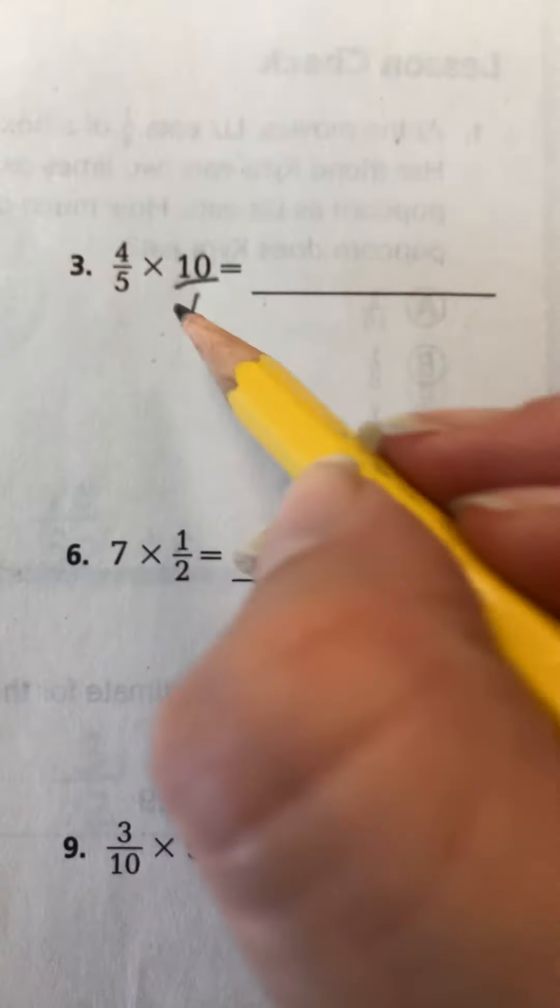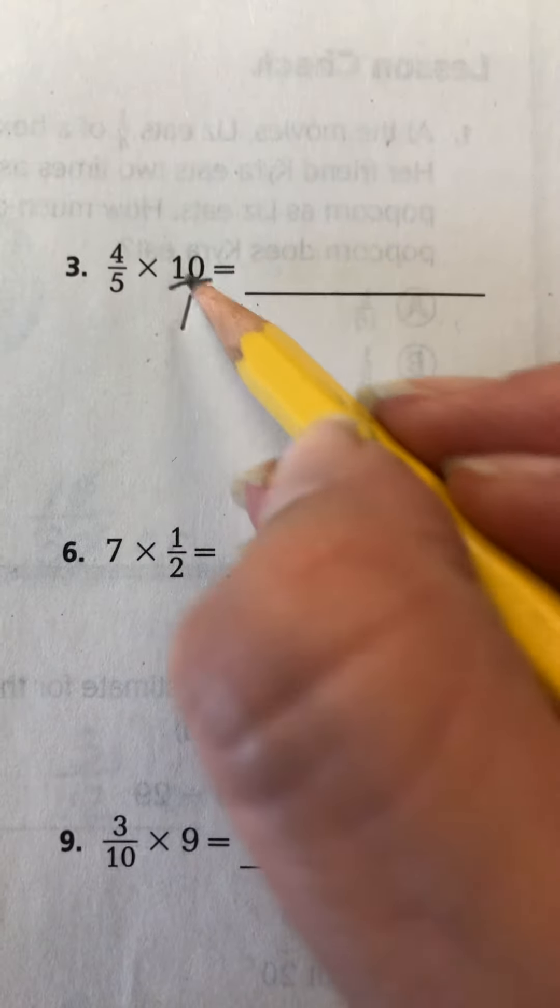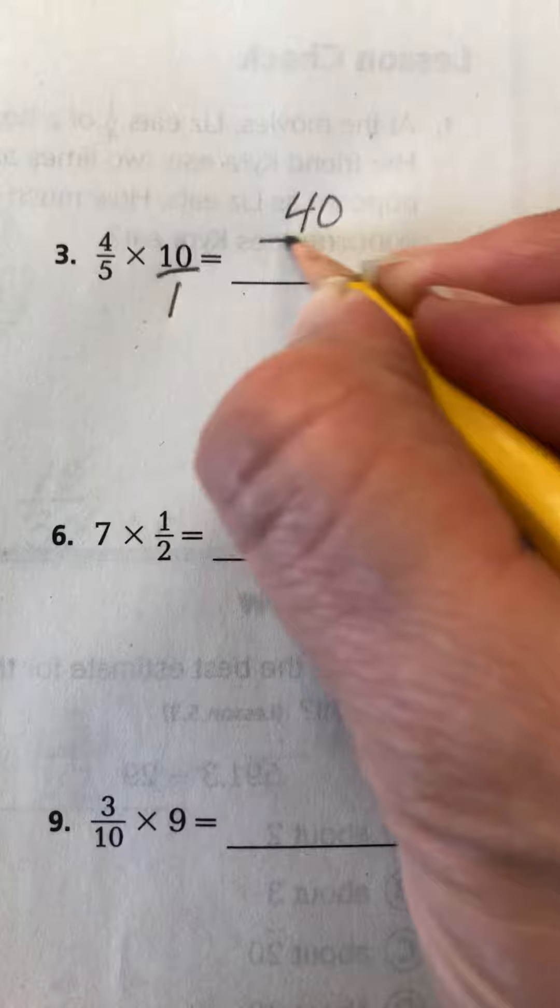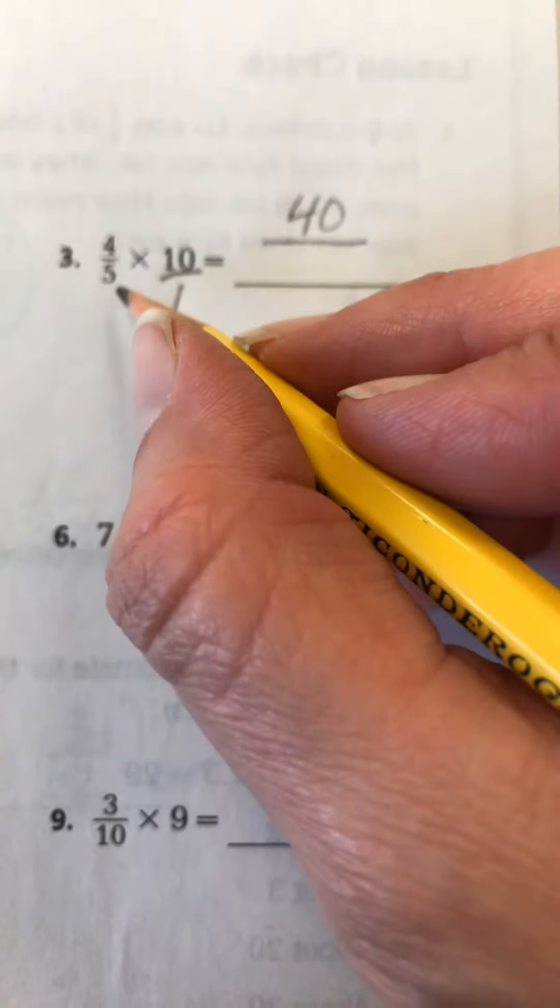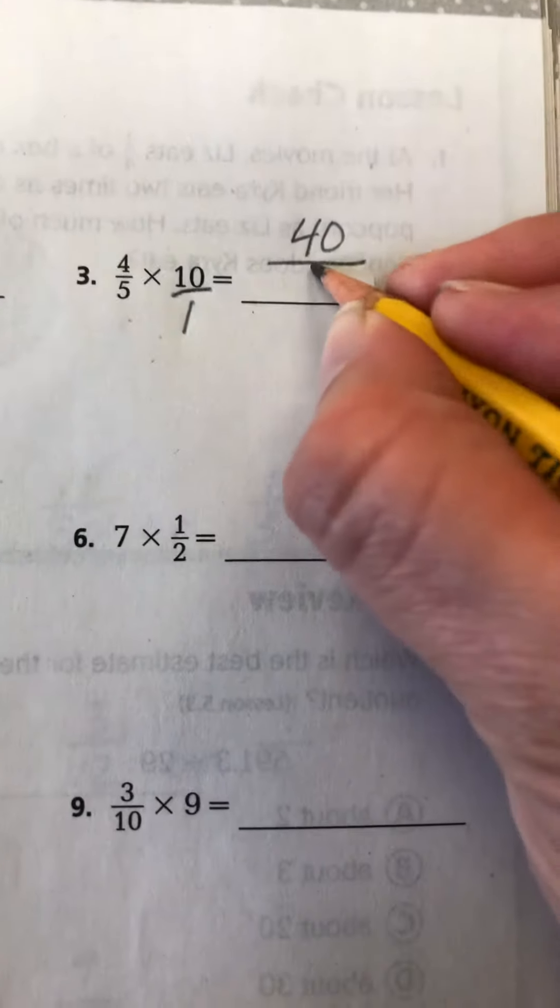So what I'm really doing when I multiply the whole number times the numerator, if I do 10 times 4, I'm going to get 40. But when I say leave the denominator the same, it's because I'm really multiplying the denominator by 1. And 5 times 1 is 5.